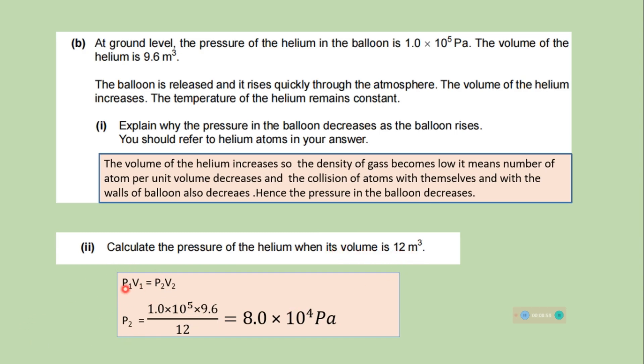Calculate the pressure of the helium when its volume is 12 meter cube. We will use this formula P1 V1 is equal to P2 V2. P2 is equal to P1 V1 divided by V2. P1 is given. It is 1 into 10 to the power 5 Pascal. V1 is 9.6 and V2 is 12. Put all the value in the formula. Calculate P2. It is 8 into 10 to the power 4 Pascal.